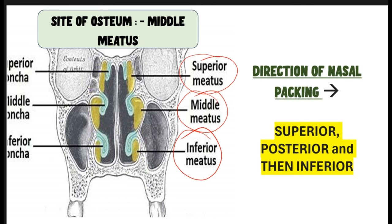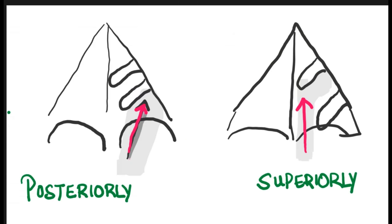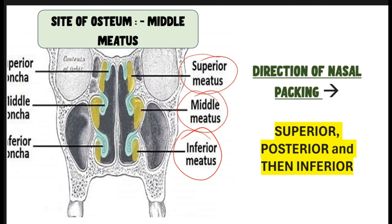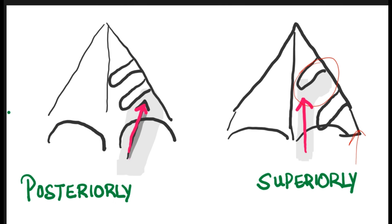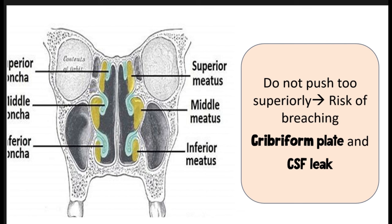The orientation of nasal packing is of significant importance. When inserting the pack posteriorly with the patient lying down, it tends to lodge into the inferior meatus. However, if directed more superiorly, it lodges into the middle meatus where the ostium needs to be created. The correct methodology is therefore to initially direct the pack superiorly, then posteriorly, then inferiorly to properly lodge packing into the middle meatus. Crucially, do not place the pack too high, as this could damage the cribriform plate, potentially leading to CSF rhinorrhea.